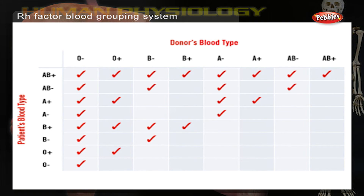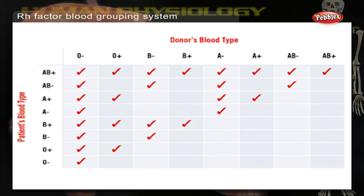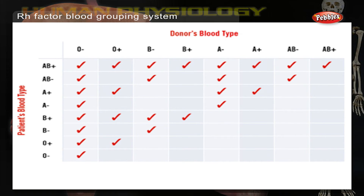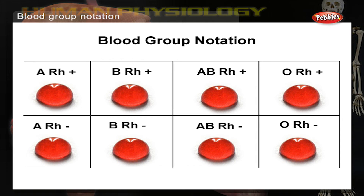A person with RH positive blood can receive blood from a person with RH negative blood without any problems. According to these blood grouping systems, you can belong to either of the following 8 blood groups: A RH positive, A RH negative, B RH positive, B RH negative, AB RH positive, AB RH negative, O RH positive, or O RH negative.